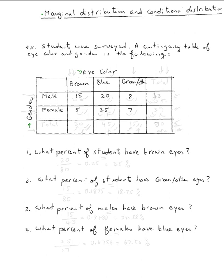What percent of students have brown eyes? We need the number of students, so we need to do all those totals in the margin. First thing we do is find all the totals. For males: 15 plus 20 is 35, and 35 plus 8 is 33.